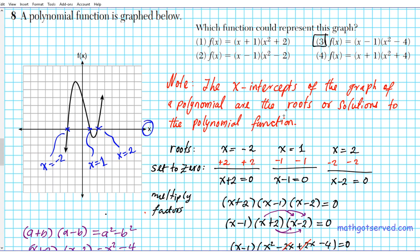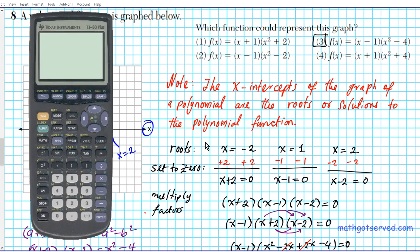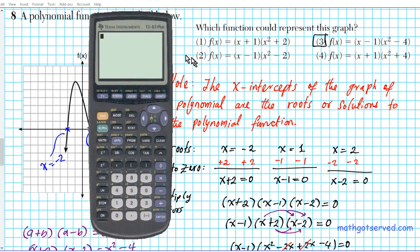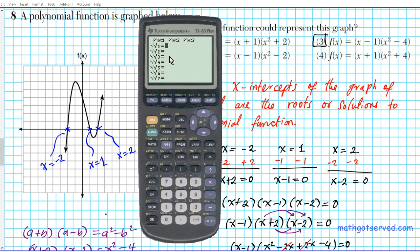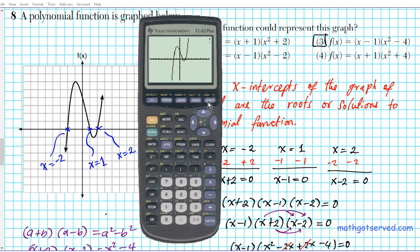Another way you can do this problem is to plug the functions into a graphing calculator and see which one results in a graph that looks just like this. If you use a graphing calculator you have to graph all four and see which one matches. We already know the answer, so let's graph the correct answer: enter x - 1 times (x² - 4), hit enter and graph. You can see how graph number three matches perfectly with what we have.